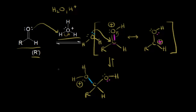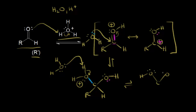We're almost to the formation of a hydrate. The last step is to deprotonate — a molecule of water comes along, functions as a base, and takes up this proton, leaving these two electrons behind on the oxygen. We now have a carbon bonded to two OH groups — we've formed our hydrate, or gem-diol. These electrons moved off onto the top oxygen. That's formation of our hydrate.